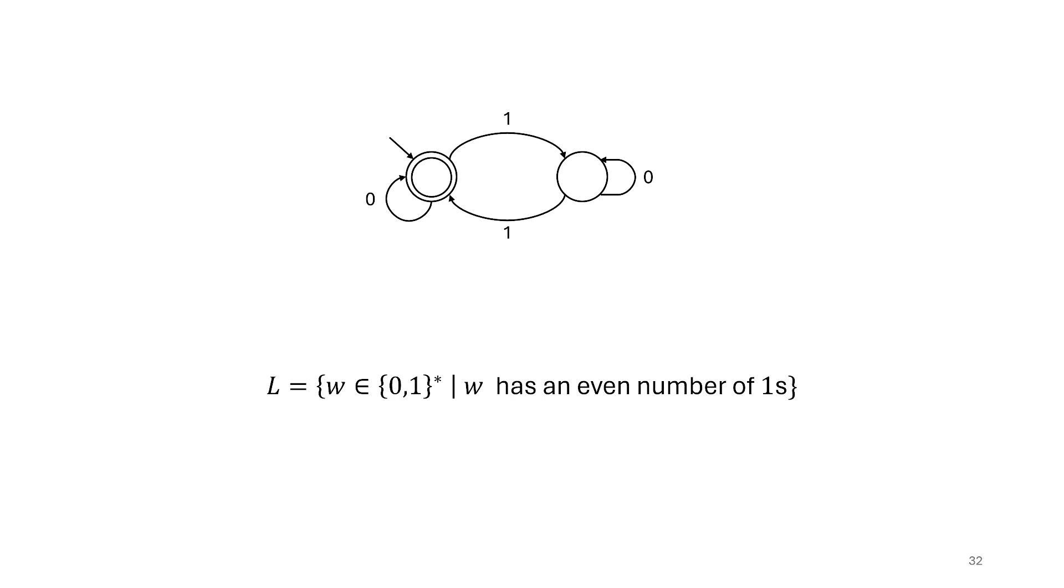So this machine detects if we have an even number of ones. That's the language that this machine was designed to recognize. This language here, L, all the strings w from our binary alphabet such that w has an even number of ones.